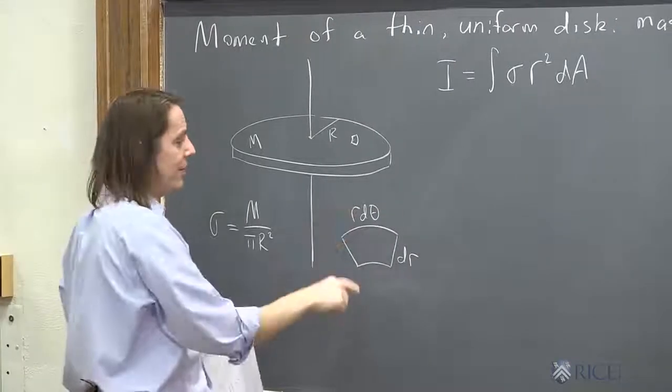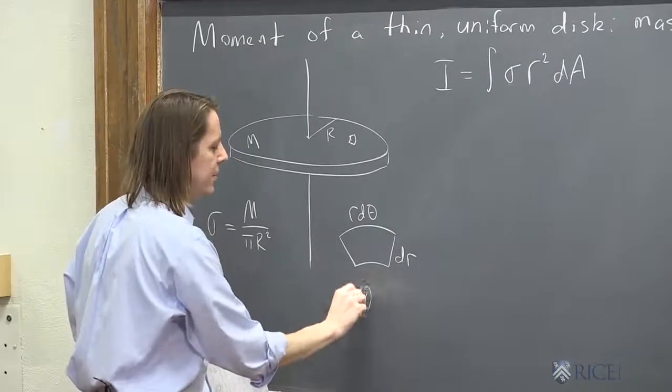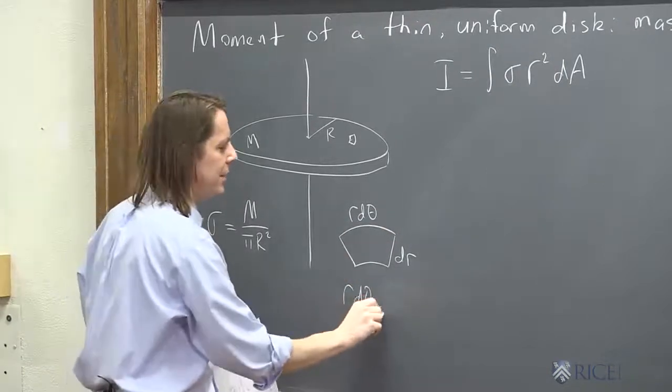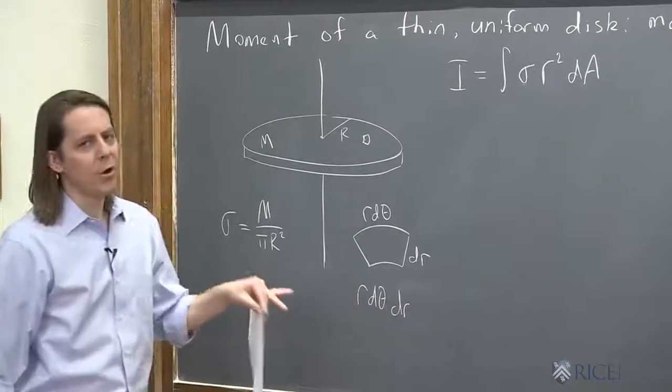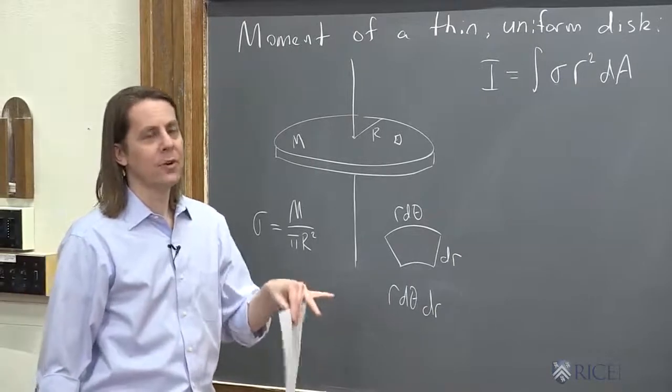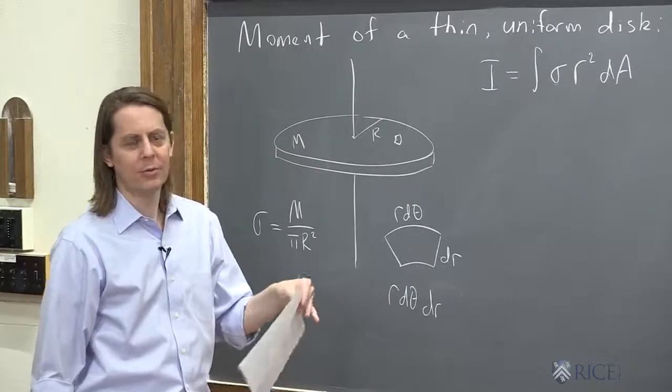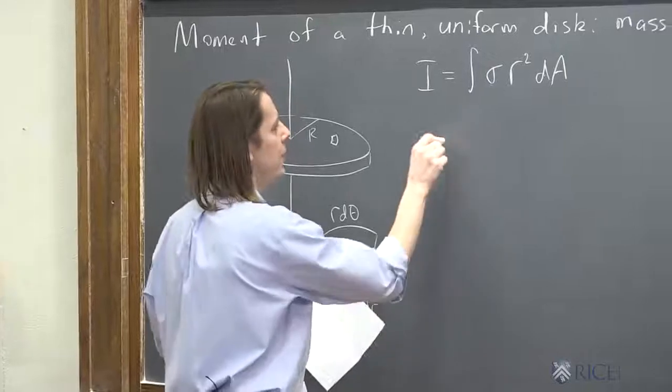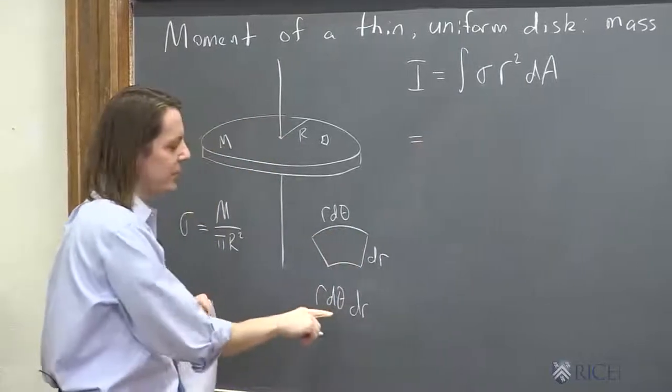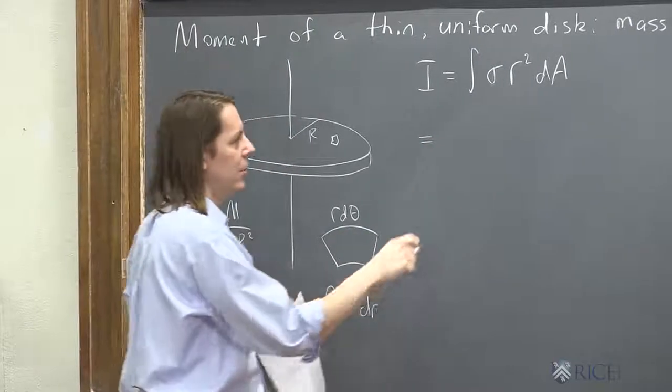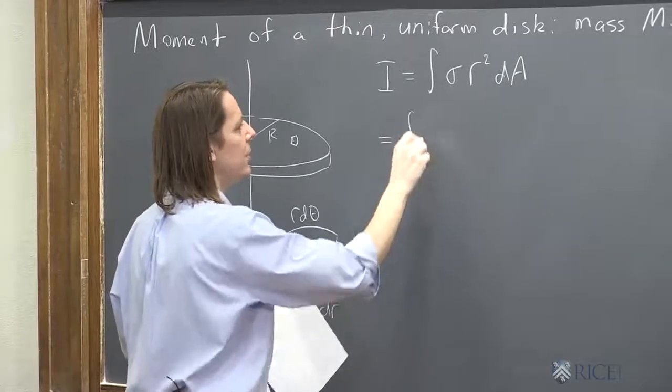The area of that is R d theta dR. R d theta is one side of the rectangle. dR is the other. And although it's R d theta dR, it's more fun to say R dR d theta. That's what we always say. I don't know why it's a pirate thing. So now we're integrating with respect to two variables then, theta and R. So we're going to say the integral and the integral.